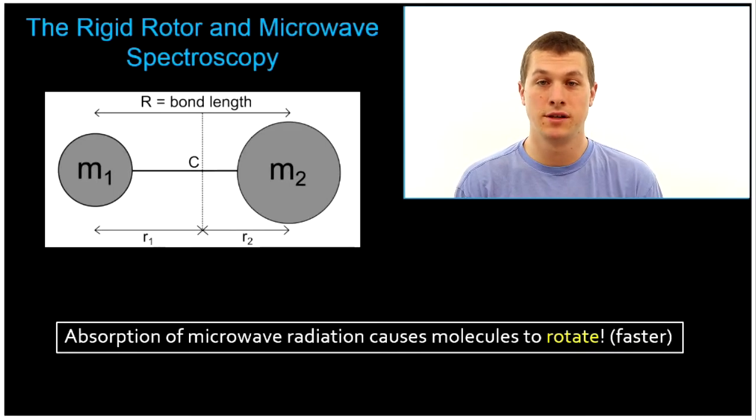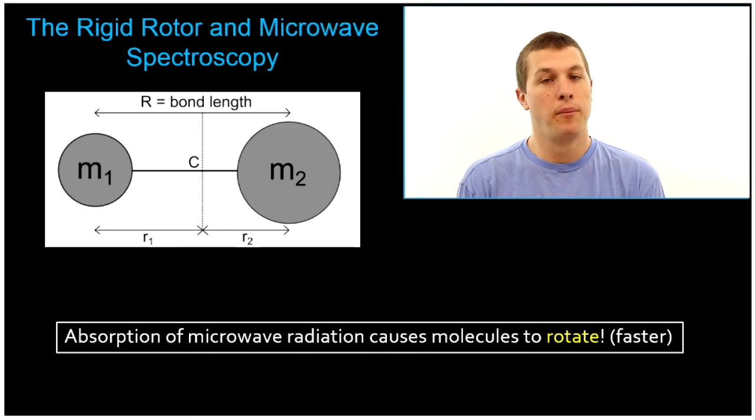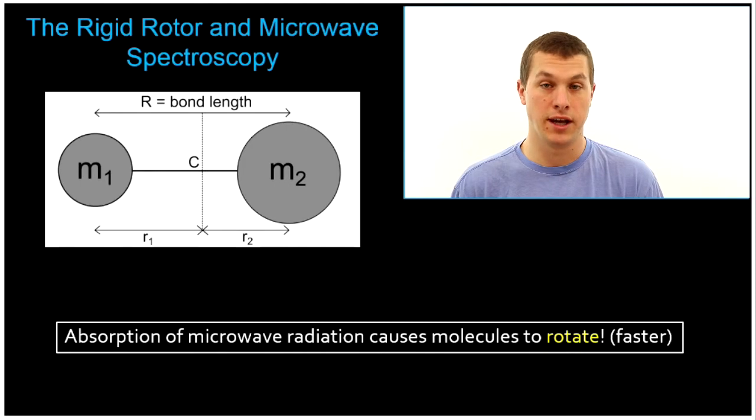Welcome to Real Chemistry. I'm Dr. Morris, and today we're going to talk about the rigid rotor and microwave spectroscopy. Microwave spectroscopy is basically just thinking about what happens to our molecules when we put microwave radiation on them. And it turns out it causes them to rotate.